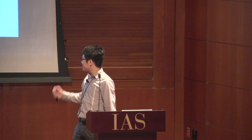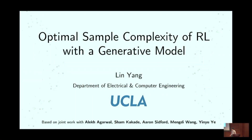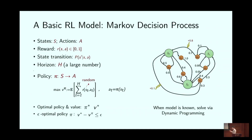Hello everyone. My name is Lin Yang. I was a postdoc here working with Mundy Wang, and I'm now an assistant professor at UCLA. This work is joint work with Alec, Sham, Aaron, Mundy, and Inu. It's about the sample complexity of a generative model in reinforcement learning. We've heard a lot of great talks about function approximation. Let's actually rewind and consider the most basic setting — the MDP. Specifically, I'm considering an episodic MDP.